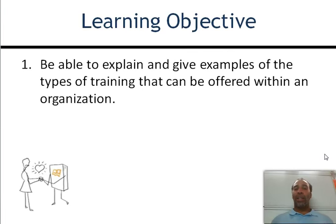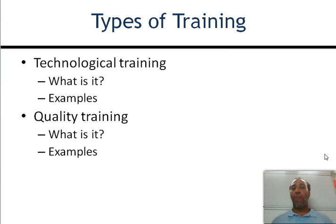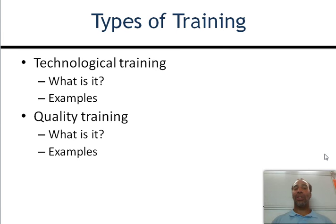Another learning objective is to explain and give examples of types of training that can be offered within an organization. We have technological training — you have to be fully skilled on Word, especially Excel. I've seen so many jobs lost because people cannot use Excel appropriately. Outlook and all kinds of different technology tools — you have to make sure you're abreast of that or you will be left behind.